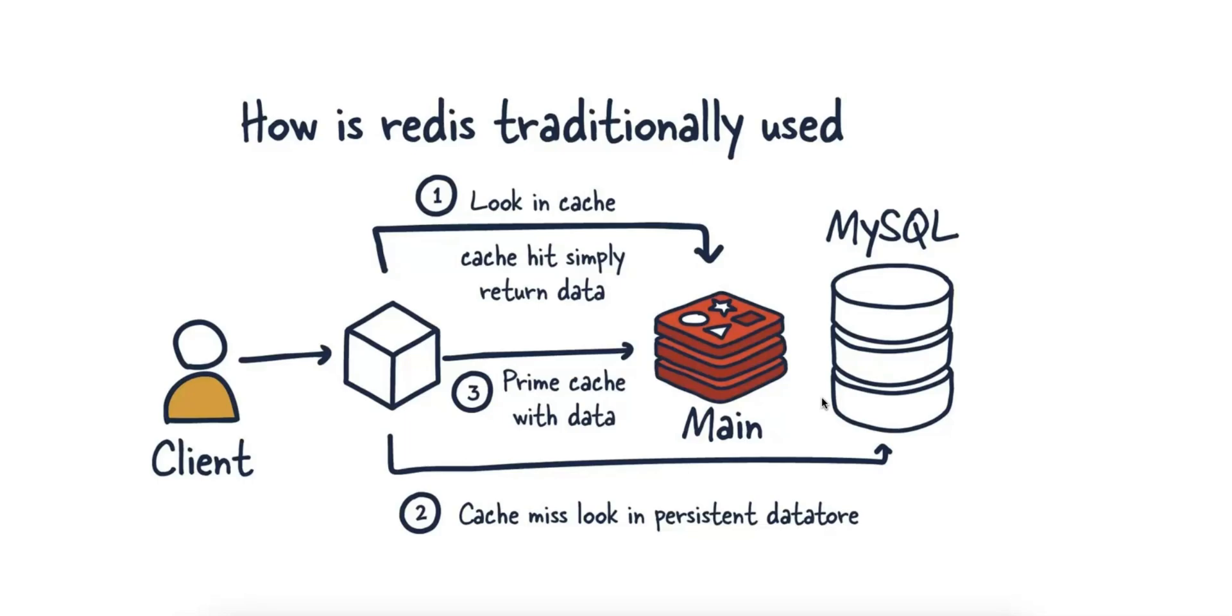2. Reduce load on the database. By caching frequently accessed data in Redis, you reduce the load on MySQL, improving the overall scalability and performance of the system.